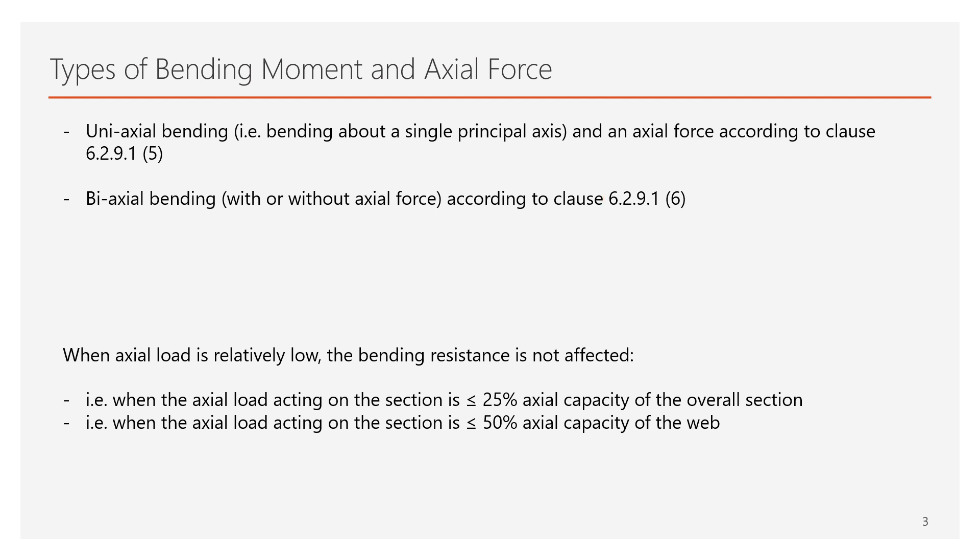It can happen with or without the axial force present in the cross section. In this case, the respective references are given in clause 6.2.9.16. In principle, we know from the previous clause that the bending strength of the member can be affected when axial force exists in the cross section. However, there are two exceptions, namely when the axial force is relatively low.